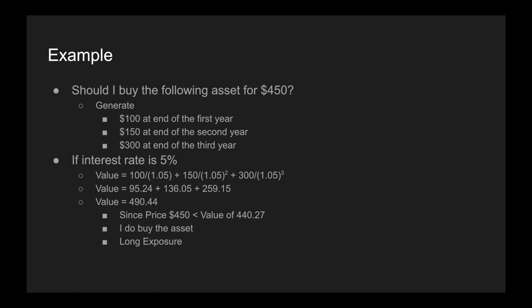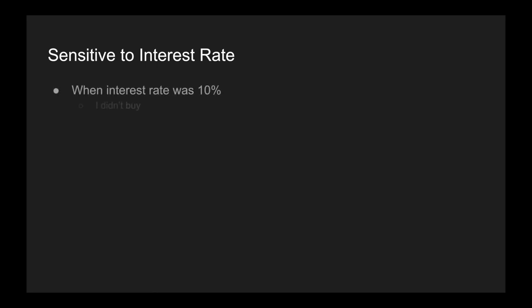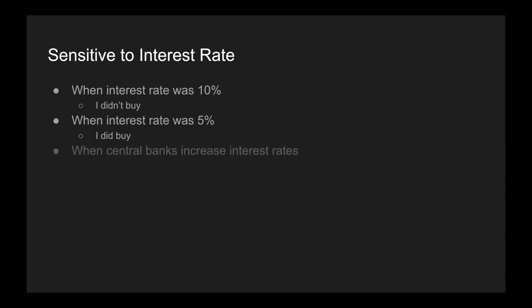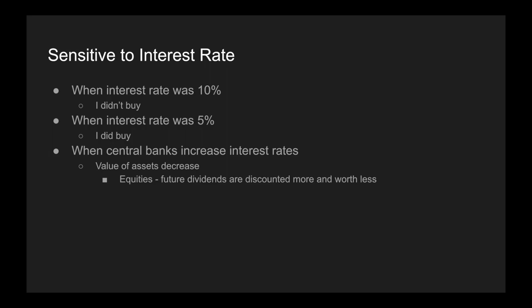What's fascinating here is what the formula is telling us about how sensitive the value of an asset is to interest rates. When the interest rate was 10%, I didn't buy. When it was 5%, I did buy. And this is what makes it difficult — we're looking into the future, and the longer we look, the more those distant cash flows are sensitive to the interest rate. That's why when central banks increase interest rates, we see the value of assets decrease. Equities' cash flows are future dividends, and the higher the interest rate, the more they're discounted and the less they're worth.